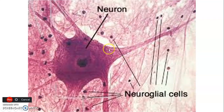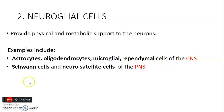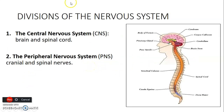Neural glial cells are cells that ensure a good physical and metabolic environment for the neurons. In the central nervous system we have astrocytes, oligodendrocytes, microglial cells, and ependymal cells, while in the peripheral nervous system you have Schwann cells and neurosatellite cells.